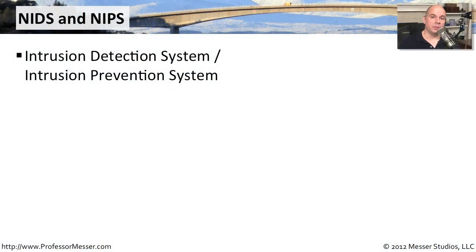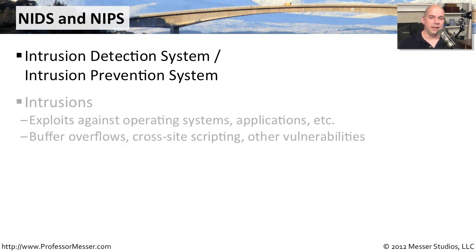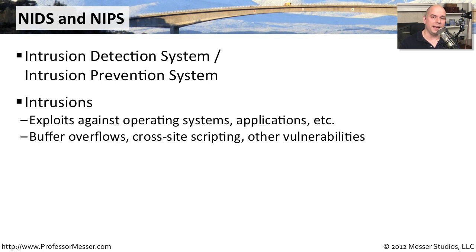If you need to stop vulnerabilities from coming across your network and attacking your services, you want to use something like a network intrusion detection system or network-based intrusion prevention system. These are designed to stop the bad guys from taking advantage of vulnerabilities that might be in your operating systems or applications — things like cross-site scripting and buffer overflows, where a bad guy could use code to gain additional access to your resources.